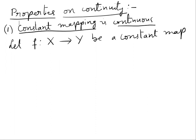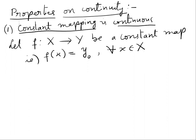Let us take a constant map or function. What do you mean by constant function? That is, f of x is equal to some constant. We can take the constant as y naught. And this y naught is fixed for all x belonging to capital X. Take any point in X, it is always mapped to y naught.